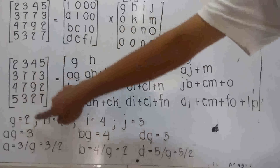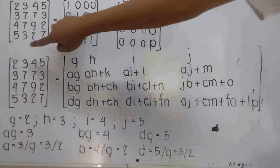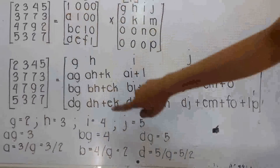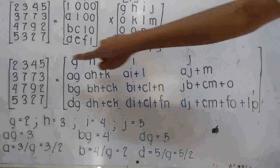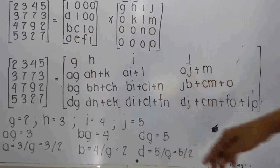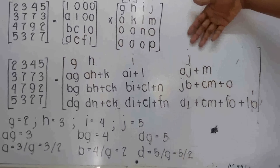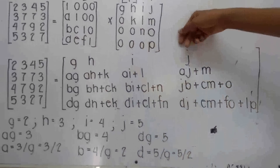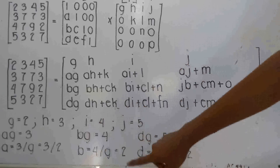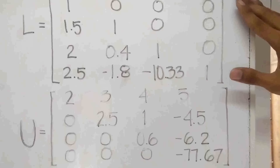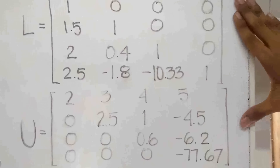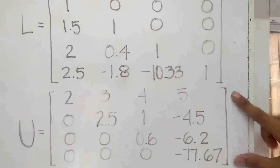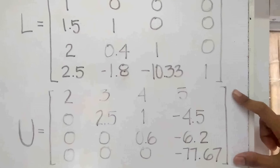For example, G is equal to 2, H is equal to 3, I is equal to 4, J is equal to 5. Doing this with the rest of the matrix positions and solving them algebraically, we will get the values for the rest of the variables like A, B, and D. If we substitute the values of the variables we obtained earlier, we will now have our lower triangular and upper triangular matrices.